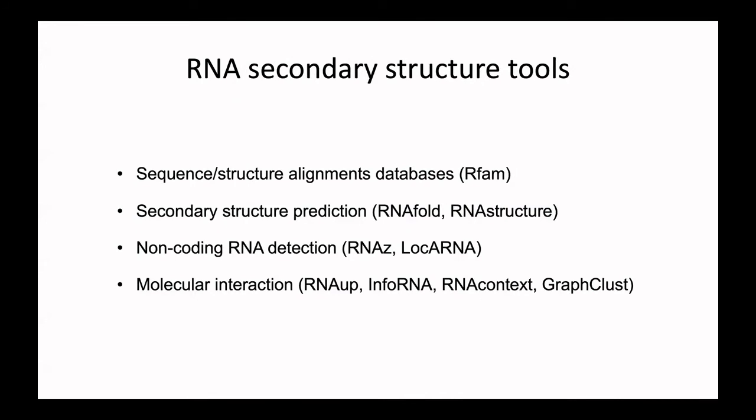Based on this secondary structure, many tools have been developed — first databases like RFAM, where we have sequence alignments and see that homologous sequences share the same structure. There are also tools developed notably by the Vienna group with the Vienna RNA package, and in the US for predicting secondary structure from sequence. Based on that, you can detect non-coding RNAs or predict interaction with other molecules, including proteins and small molecules. The secondary structure has been the basis for many tools we use today to analyze and understand RNAs.